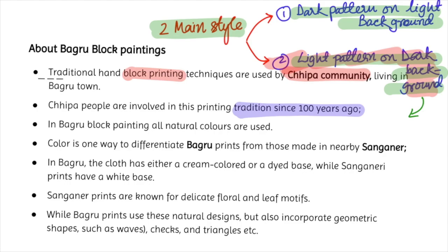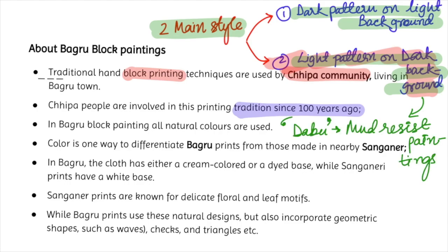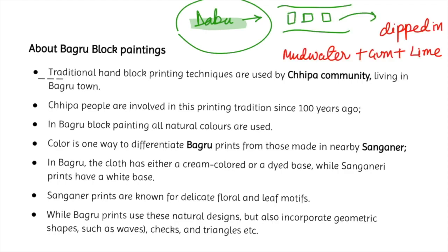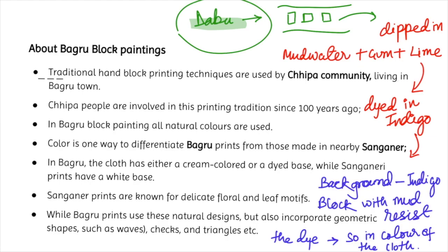The second style is known as Dabu or mud-resist printing. In this method, the cloth is stamped with blocks, then dipped in mud water mixed with gum powder and lime. The whole fabric is then dyed in indigo. The background comes out in indigo, while the areas with the block motifs — having the mud resist — resist the dye and remain in the original color of the cloth, creating a light design on a dark background.